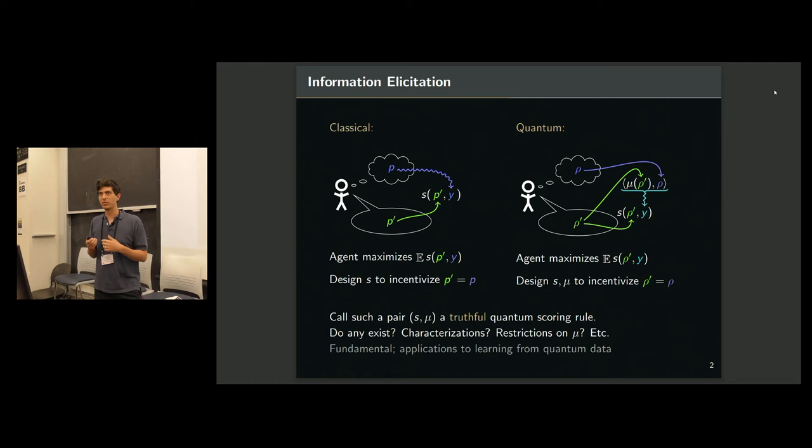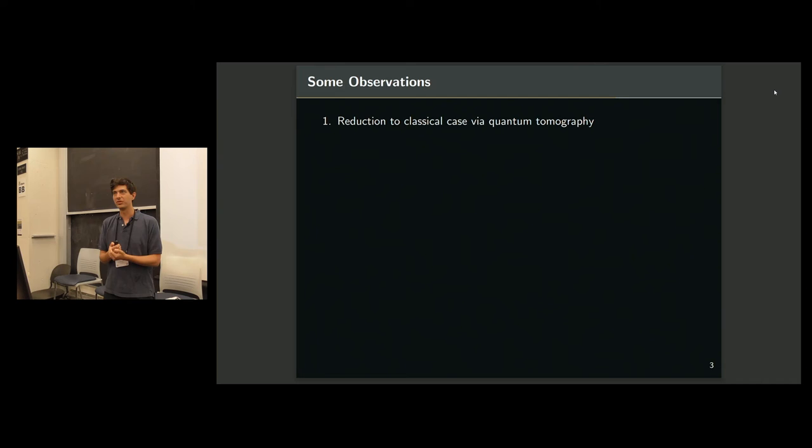So I'll just briefly tell you the high level gist of the results. It turns out that almost immediately, you can answer the first question using tools from quantum tomography. So a measurement is tomographically complete if basically the map from the true mixed state rho to the distribution that it induces over outcomes, when you perform this measurement, is injective, meaning that it's a rich enough measurement that you can figure out what the mixed state would have been if you knew the full distribution over the outcomes.